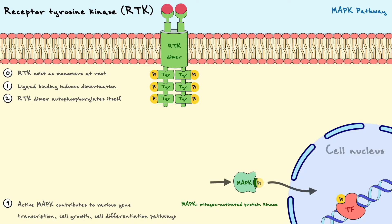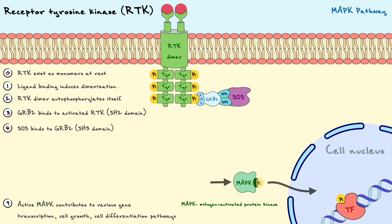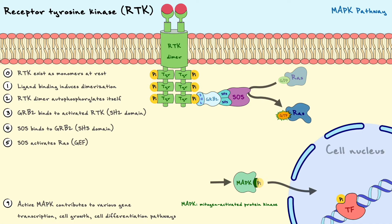After dimerization and activation of RTK, a protein named GRB2 comes and binds to a phosphorylated tyrosine. To bind to the phosphorylated tyrosine, GRB2 has a particular domain named SH2 that has the specific sequence allowing it to bind to phosphorylated tyrosines. GRB2 also has two additional domains named SH3 that bind to proline-rich sequences in another protein named SOS. GRB2 thus acts as an adapter protein to link the activation of the RTK to SOS.